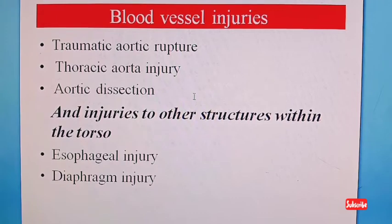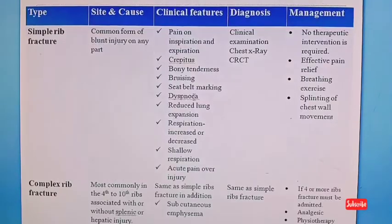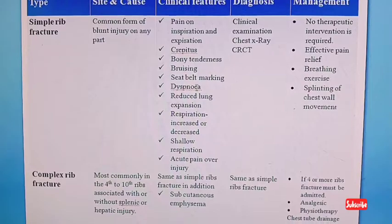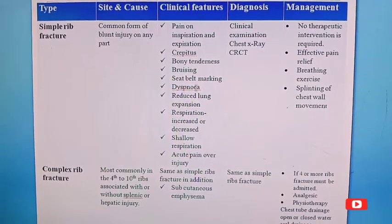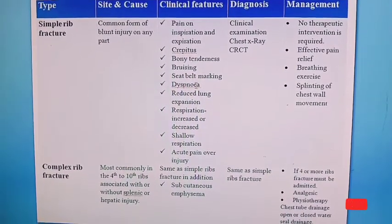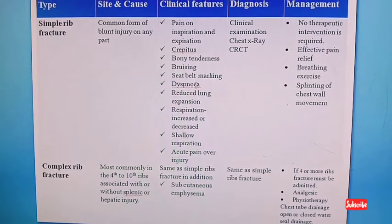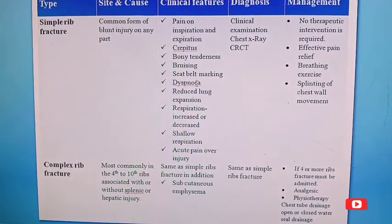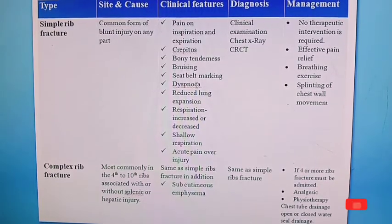Additional injuries include esophageal injury and diaphragmatic injury. Now we will discuss the various types of chest wall injuries and their underlying structure with clinical features and management. The first one is simple rib fracture.